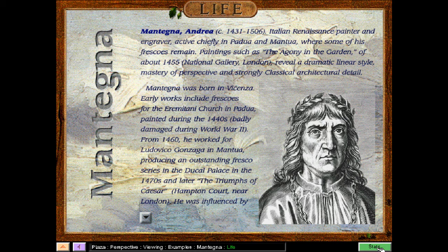Let's go to the life of the painter. This is Andrea Mantegna. He's an Italian Renaissance painter and engraver, active chiefly in Padua and Mantua, where some of his frescoes remain. Paintings such as The Agony in the Garden of about 1455 reveal a dramatic linear style, mastery of perspective, and strongly classical architectural detail. Mantegna was born in Vicenza. Early works include frescoes for the Erematani Church in Padua, painted during the 1440s, badly damaged during World War II. From 1460, he worked for Ludovico Gonzaga in Mantua, and produced an outstanding fresco series in the Ducal Palace in the 1470s, and later The Triumphs of Caesar.